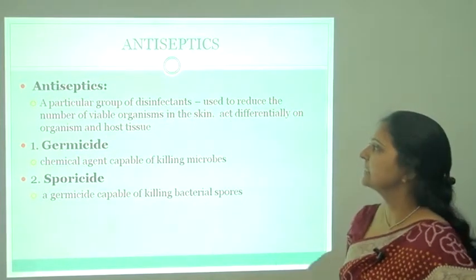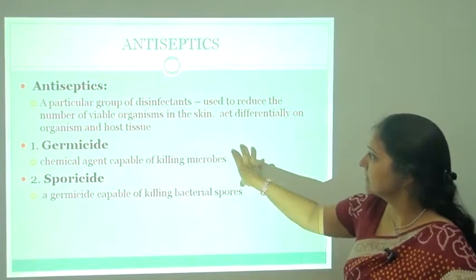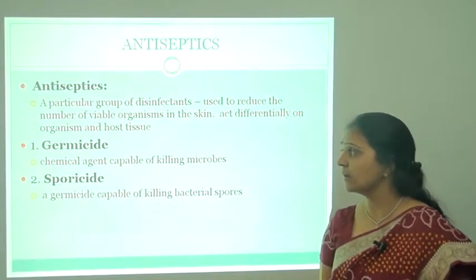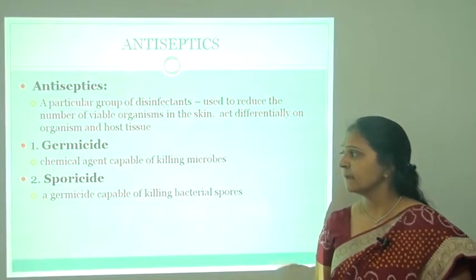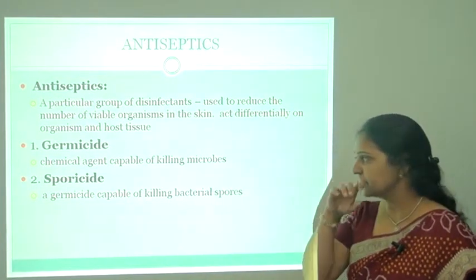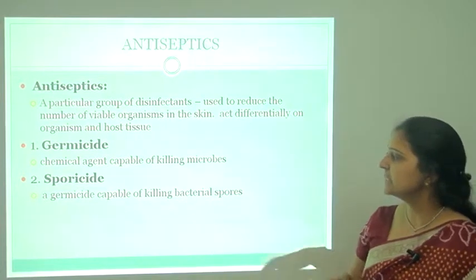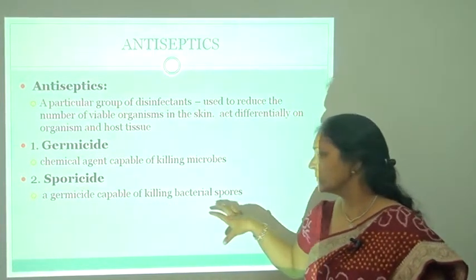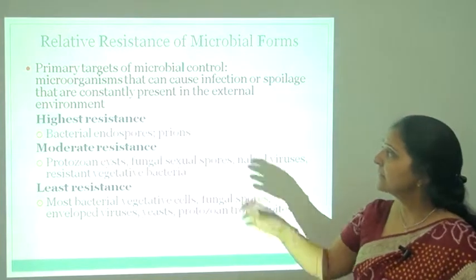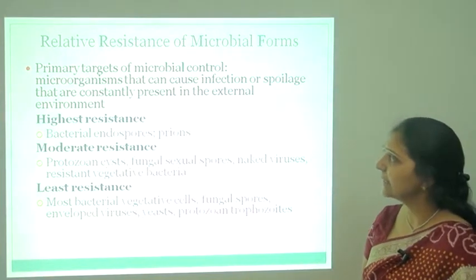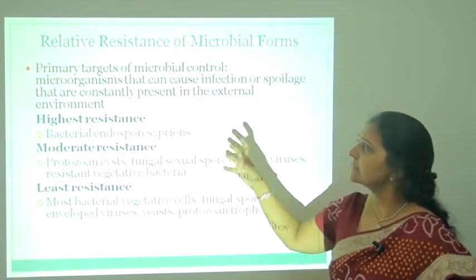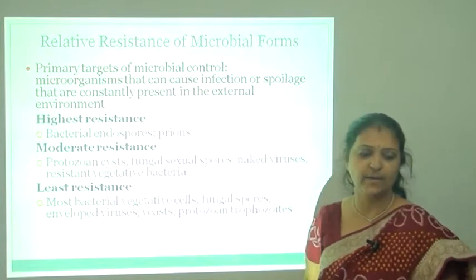What is antisepsis? A particular group of disinfectants used to reduce the number of viable organisms on the skin, acting differentially on the organisms and the host tissues. What is germicide? That is the chemical agent capable of killing microorganisms. Sporicides are chemicals capable of killing bacterial spores. The primary targets of microbial control are microorganisms that cause infection or spoilage, constantly present in the external environment.